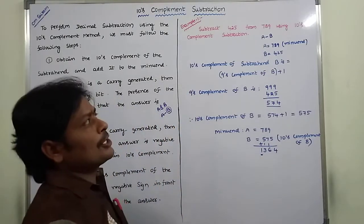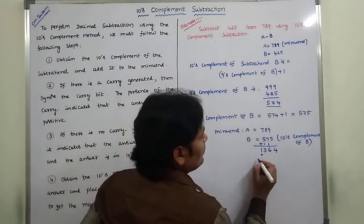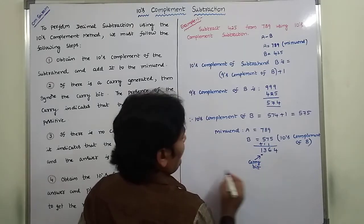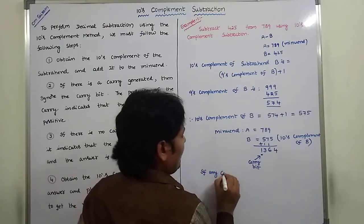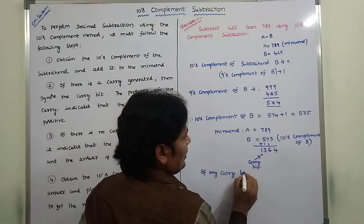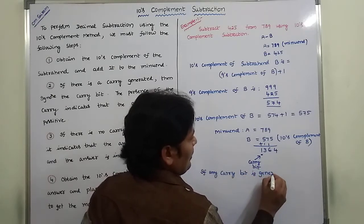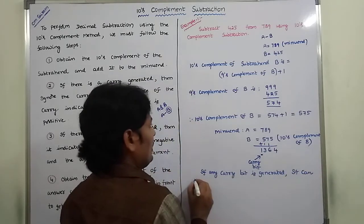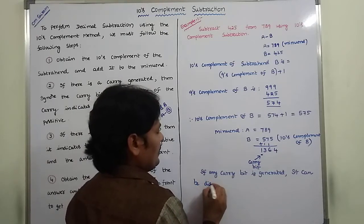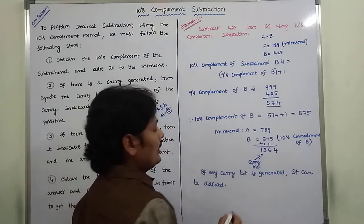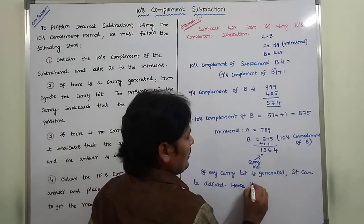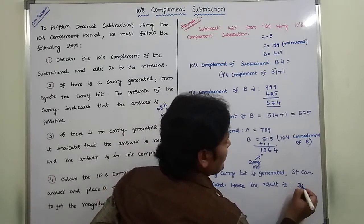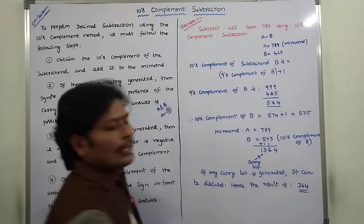If any carry bit is generated, it can be discarded. So this carry bit is discarded. Hence, the result after discarding the carry bit is 364.